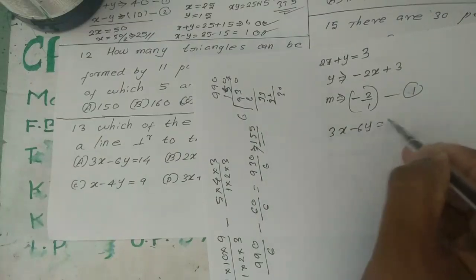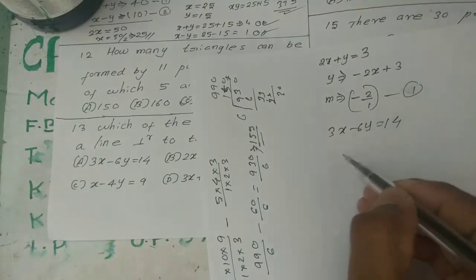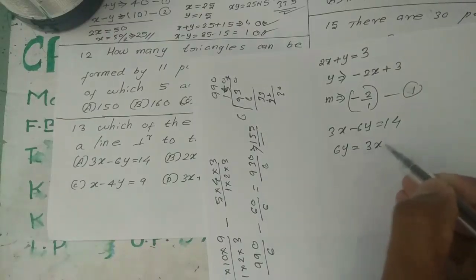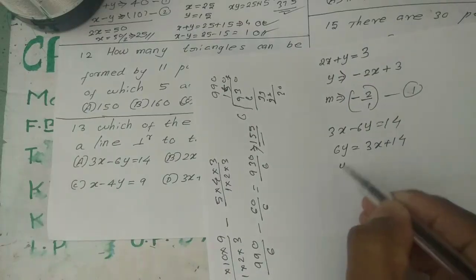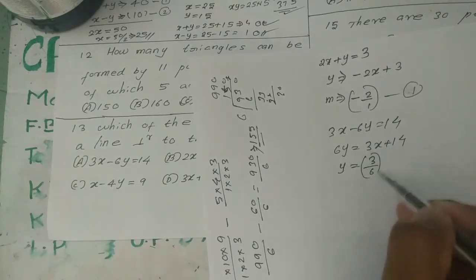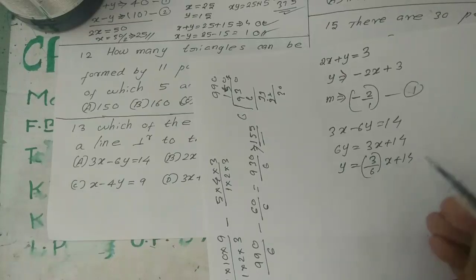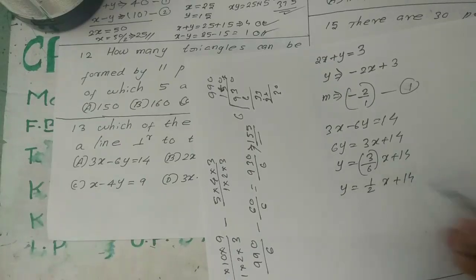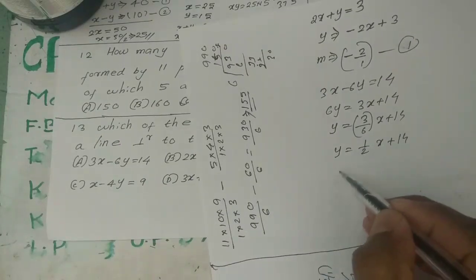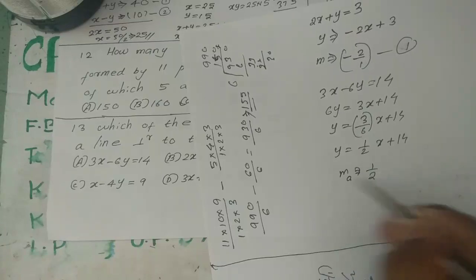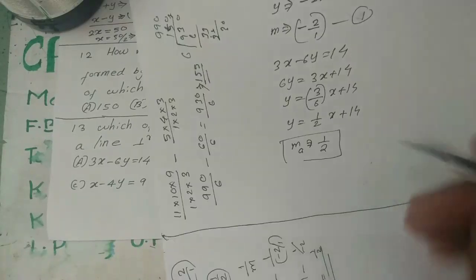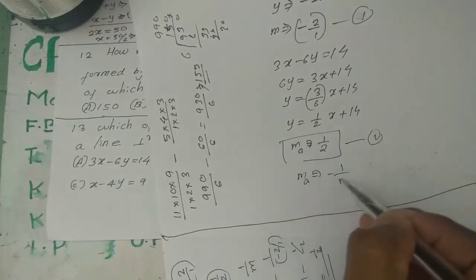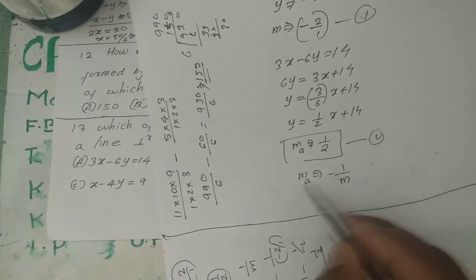Let's check the options. Consider option A: 3x minus 6y equal to 14. Rearranging: 6y equal to 3x minus 14, so y equal to (1/2)x minus 14/6. Therefore the slope m equal to 1/2. We check the perpendicularity condition: m equal to minus 1 divided by m of original line.